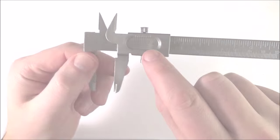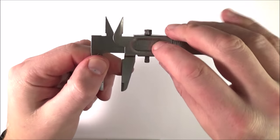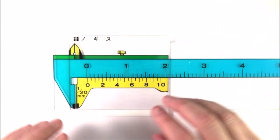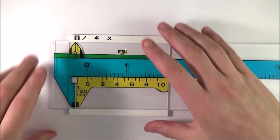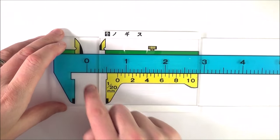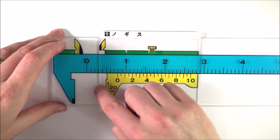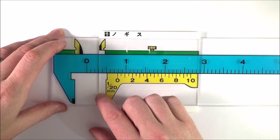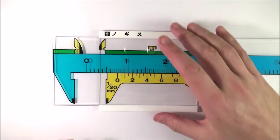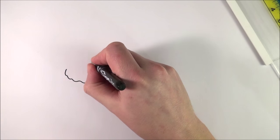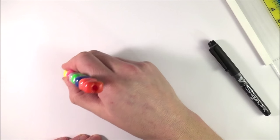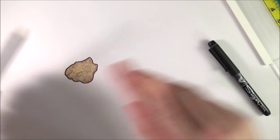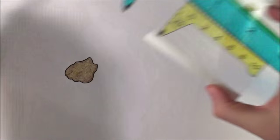This vernier scale here is actually quite hard to see, so what I have instead is a model of it which is really big. This is really useful. What we're going to look at is if we measure an object using these jaws here, by reading the scale we can get an indication of how big that object is. First of all we need some kind of object.